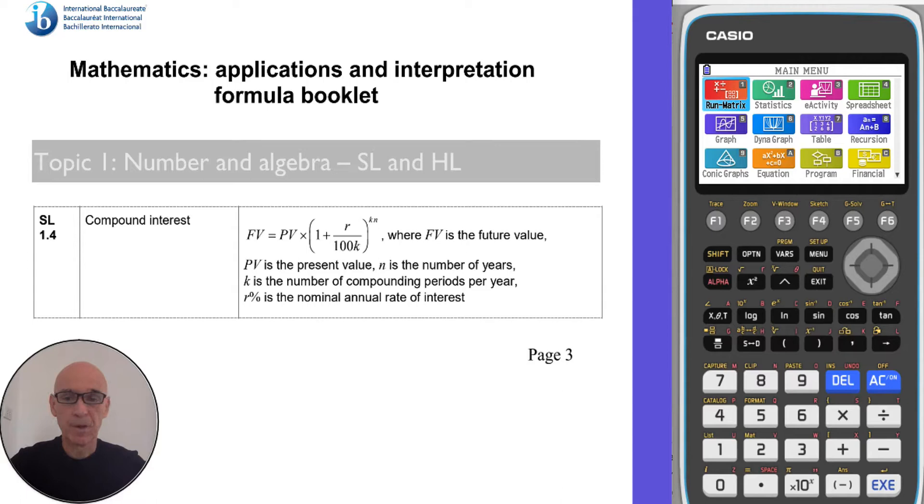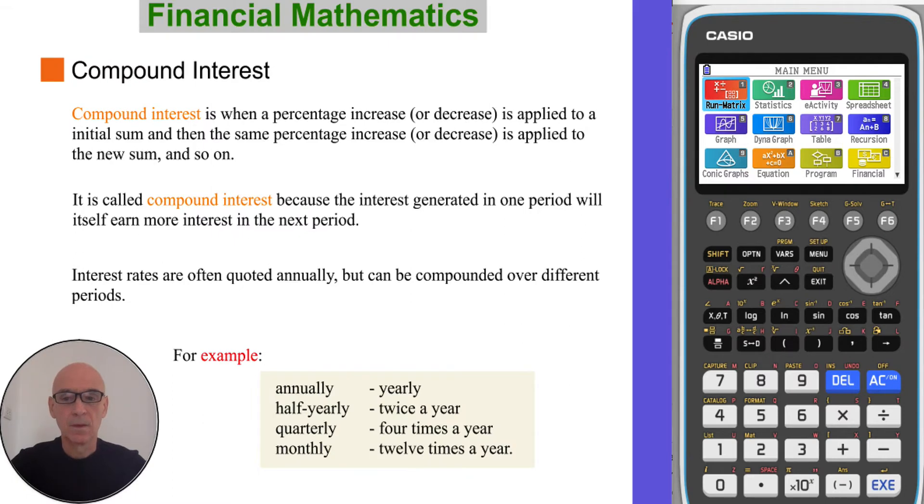The formula for compound interest is shown on page 3 of your formula booklet. Compound interest is when a percentage increase or decrease is applied to an initial sum and then the same percentage increase or decrease is applied to the new sum and so on. It's called compound interest because the interest generated in one period will itself earn more interest in the next period.